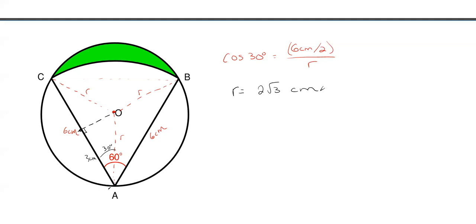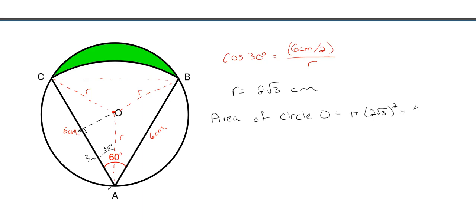Now that we have the radius, we can find the area of the entire circle — our very first thing we were looking for. The area of circle O will just be pi R squared, so pi times the radius of two square roots of three centimeters squared, and that gives me 12π centimeters squared. I'm going to star that for right now because we're going to need it later.